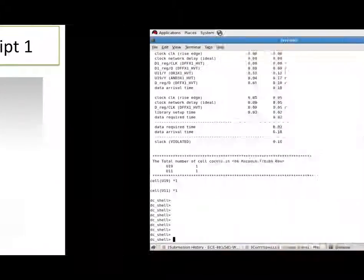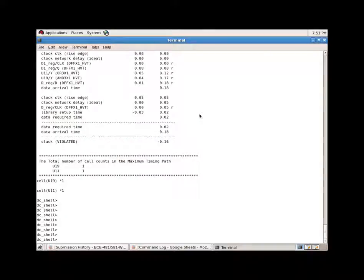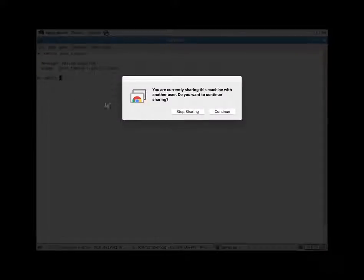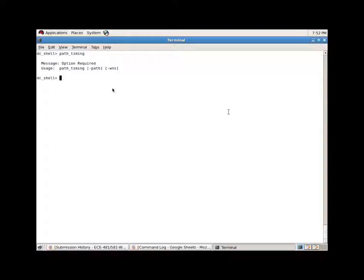Alright, it's time for demo now. Our program is already loaded and let's do a test. First, when the user wants to find the timing paths and just types report timing, it gives the options. There are two options: user can define either only path, only worst negative slack, or both. So let's look for the first timing path.